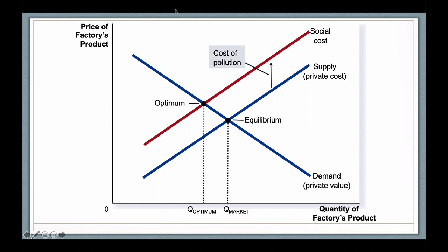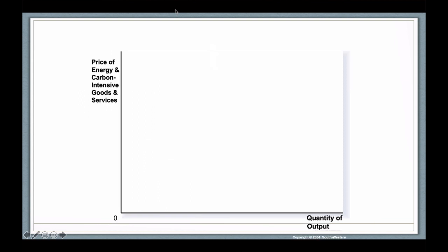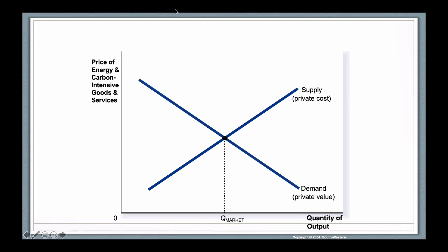And we can apply this to any kind of externality, including climate change. So let me just give you the same picture, but looking at climate change. So here we're talking about all energy carbon intensive goods and services. And these are being supplied at a certain level given private cost, but at a certain demand given private value. And this is the level that the market would then produce.